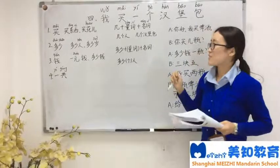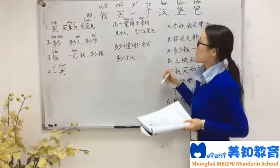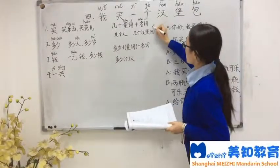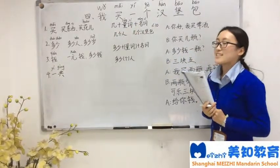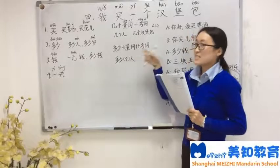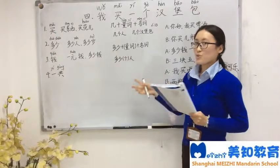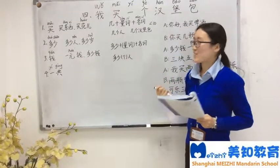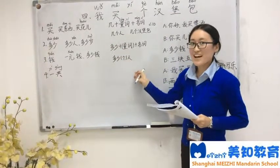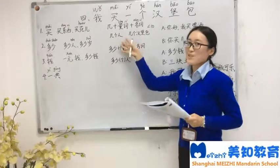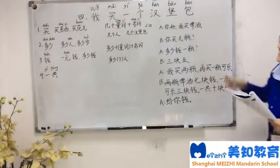多少个人. There is a little difference between 几 and 多少. If the number is less than ten, you can use 几. For example, 你几岁了. Also, 几岁 is used when asking a child's age — 你几岁了. If you ask me how old I am, you should use 多少 — 你多少岁了. You cannot ask me 你几岁了 because I'm not a child.